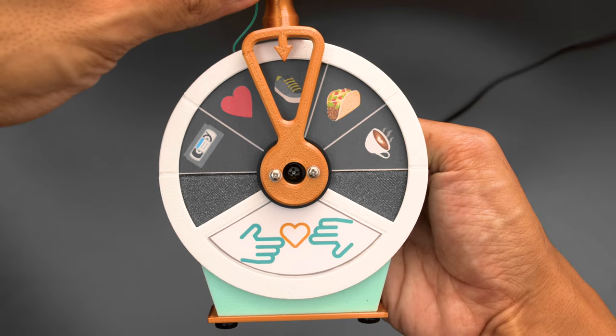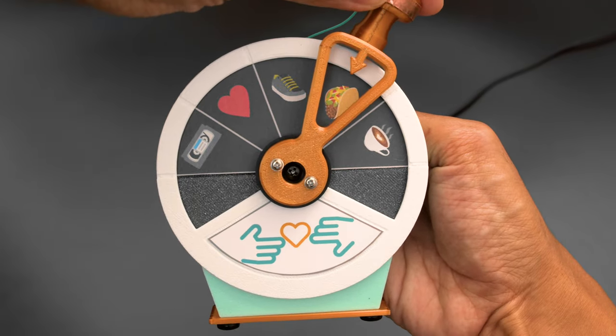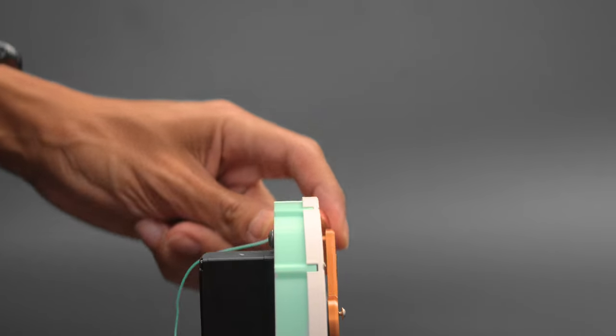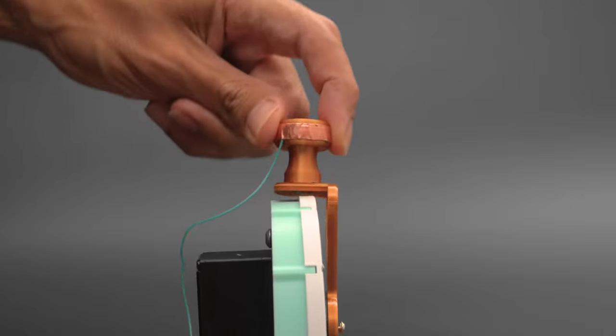These emojis represent the activities you're interested in, and the 3D printed handle lets you select the one you'd like to do. A piece of copper tape is used to detect when it's being held and released, thanks to the magic of capacitive touch.